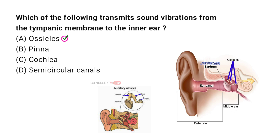The malleus then transmits the vibrations to the incus. Finally, the incus passes the vibrations to the stapes. This process helps amplify sound so it can be processed by the inner ear.